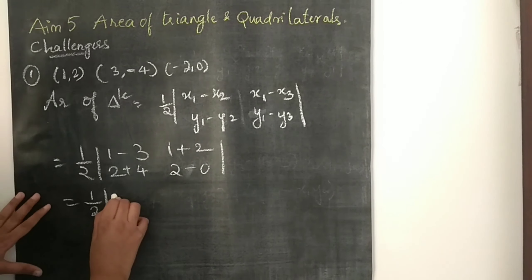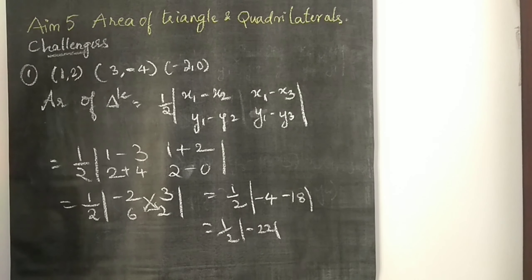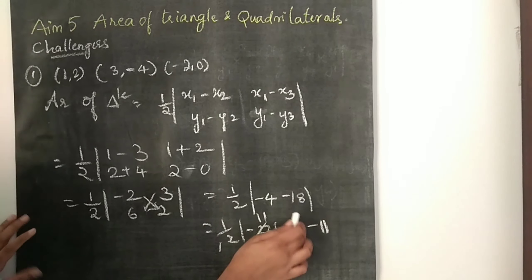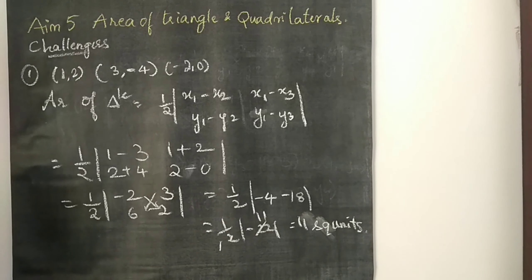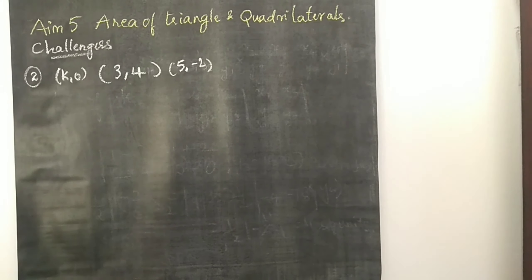Half into: 1 minus 3 is minus 2; 1 plus 2 is 3; 2 plus 4 is 6; 2 minus 0 is 2. Now cross multiplication: 2 twos are 4, so minus 4; minus 3 sixes are 18, so minus 18. That gives minus 4 minus 18 which is minus 22. Taking the absolute value (modulus), it becomes 22. Then half into 22 gives minus 11. Inside the modulus it goes positive — so the area is 11 square units.